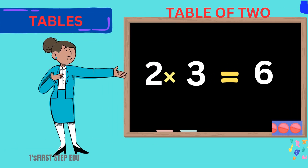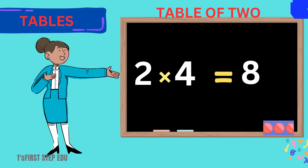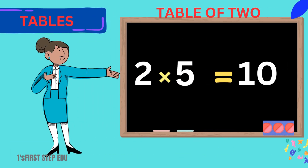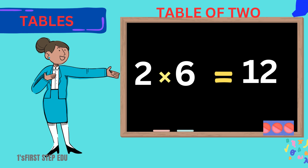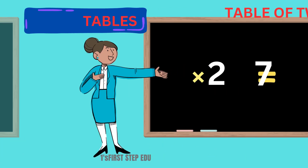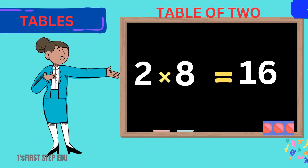2 twos are 4. 2 twos are 4. 2 threes are 6. 2 threes are 6. 2 fours are 8. 2 fours are 8. 2 fives are 10. 2 fives are 10. 2 sixes are 12. 2 sixes are 12.